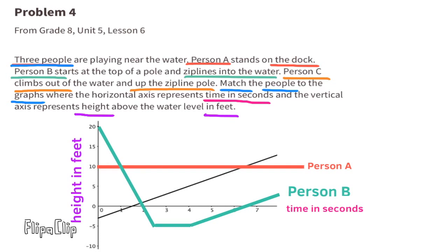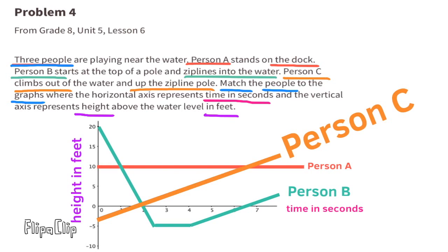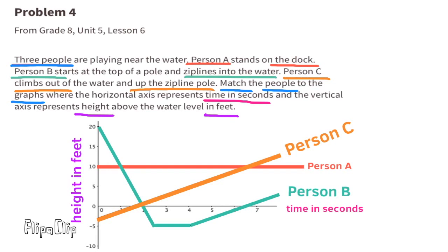That leaves us with Person C. Person C climbs out of the water and up the zipline pole. It takes them a lot longer to climb out of the water than it did for Person B to zipline into the water, and that does make sense.